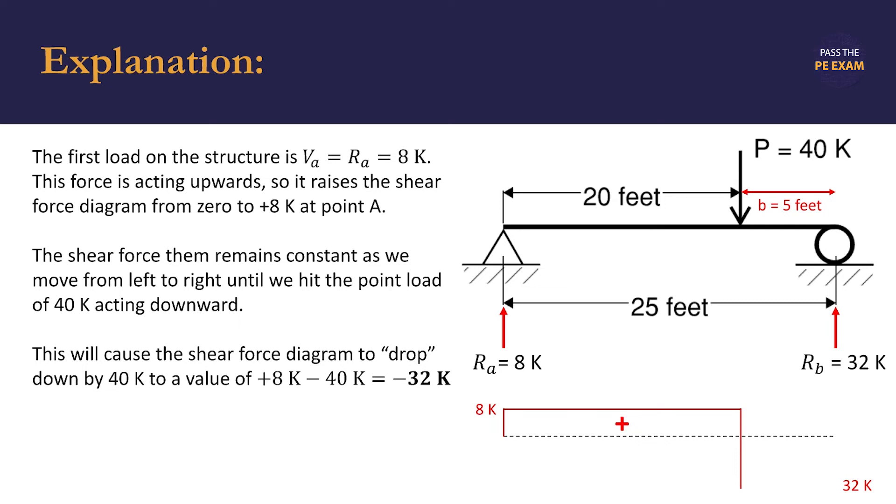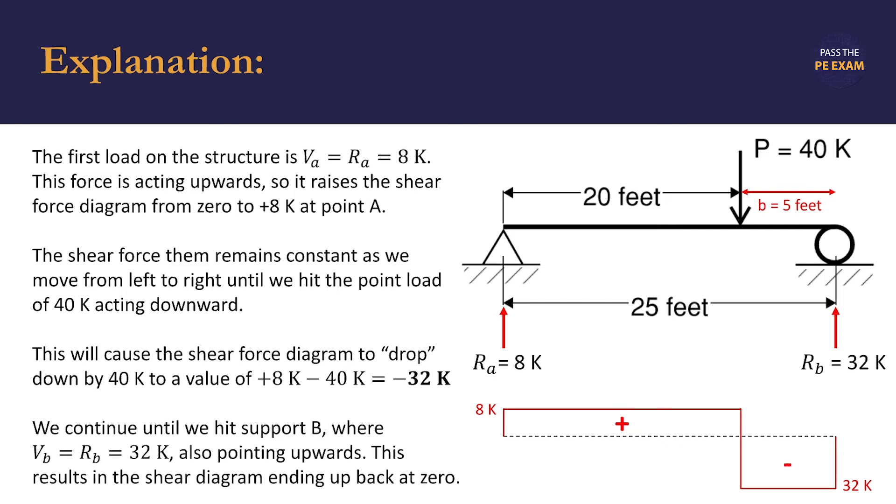Just like at point A, we draw a vertical line showing the transition from positive 8 kips to negative 32 kips resulting from the 40 kip downward point load. We continue drawing our horizontal line from left to right until we hit support B, where the third force is.